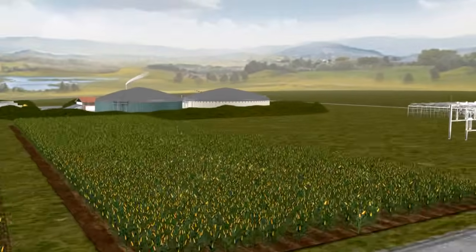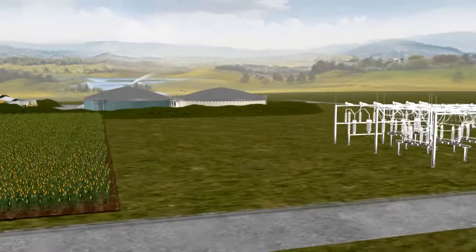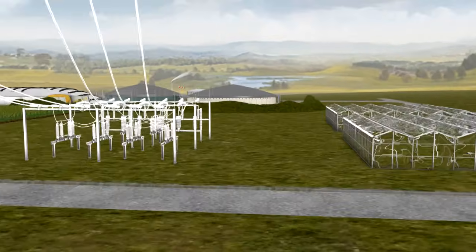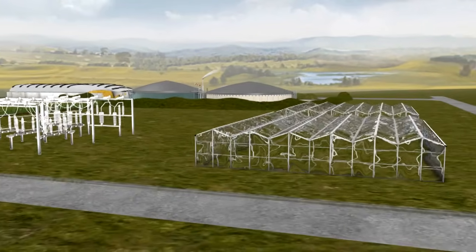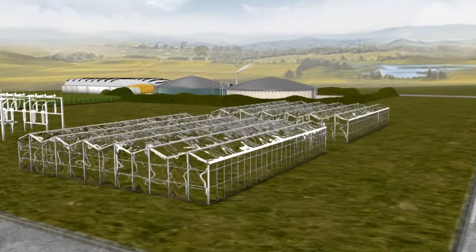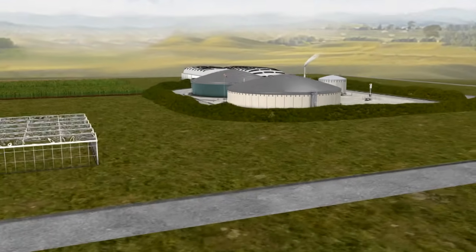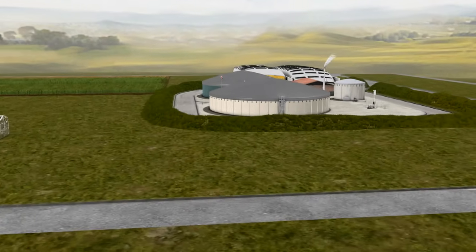In the process, the combined heat and power unit within the biogas plant creates not only electricity, but heat, which can be used in a variety of ways. An alternative to the production of electricity and heat is the upgrading of biogas to biomethane, which is supplied into the natural gas network.